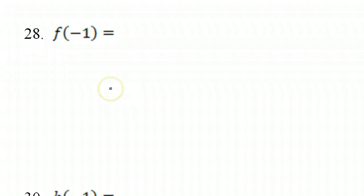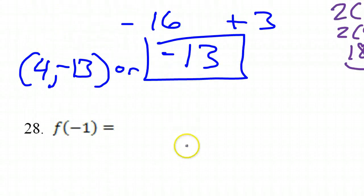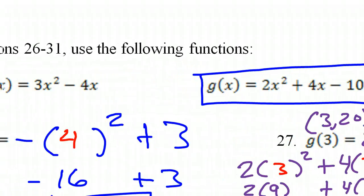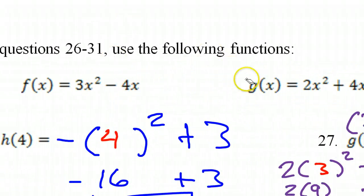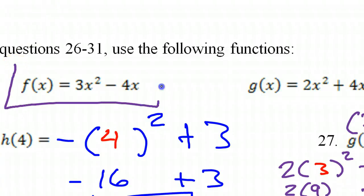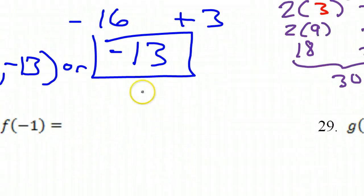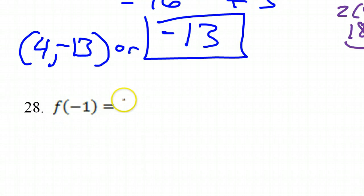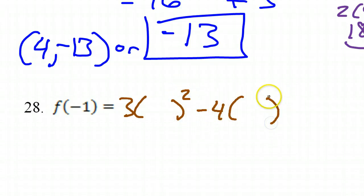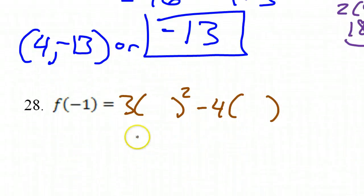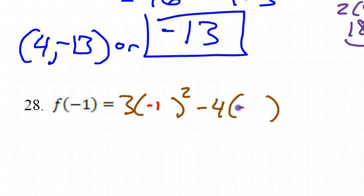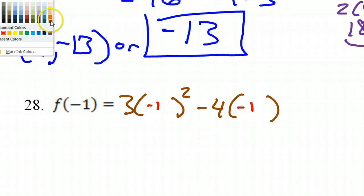Number 28 — we're using function f, which is 3x squared minus 4x. So this will become 3 times parenthesis squared minus 4 times parenthesis. And inside, we have to evaluate at negative 1.